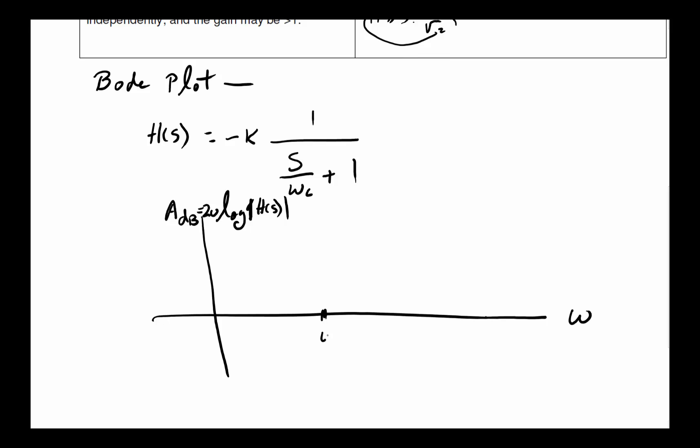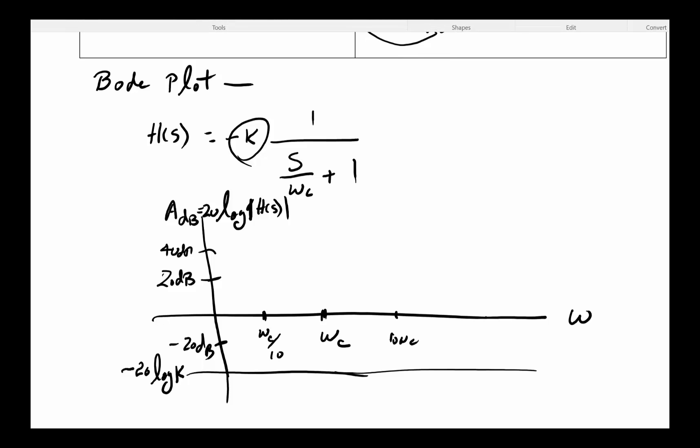Whatever Omega_C is, let's say Omega_C is here, one-tenth of Omega_C ends up here, and ten Omega_C ends up here. We've got 20dB, 40dB, and minus 20dB. We have one component which is 20*log of k. That's the constant, so this is going to be at minus 20*log(k). That's the constant that is going to run through the whole thing.